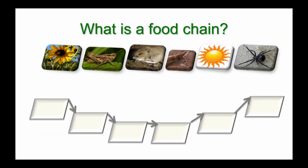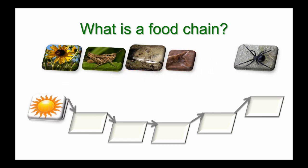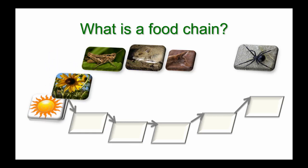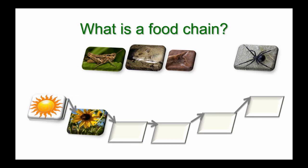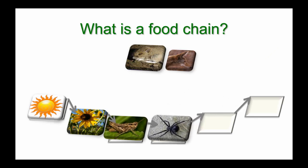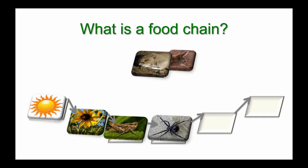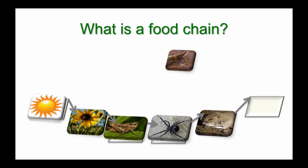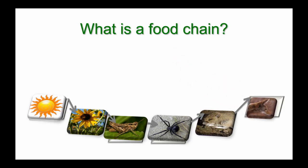A food chain is another way to show these energy relationships in an ecosystem. Here we have a very simple food chain: the sun starts off and gives energy to our plants. Our plants convert that energy into usable food for the grasshoppers, which are then consumed by the spiders. The mice eat the spiders, and the coyote in the system is going to consume the mouse.